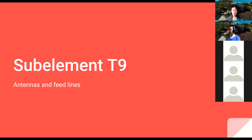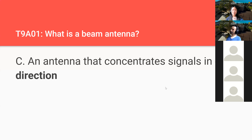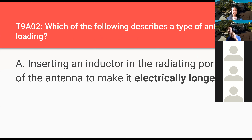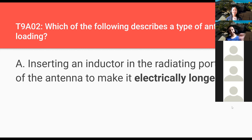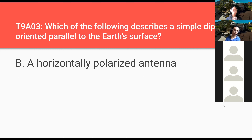Sub-element T9 — antennas and feed lines. What is a beam antenna? It is an antenna that concentrates signal in one direction, like a laser beam. Which of the following describes a type of antenna loading? Inserting an inductor into the radiating portion of an antenna to make it electrically longer — you coil your antenna wire, which makes it electrically longer than it physically is.